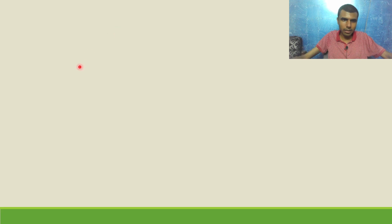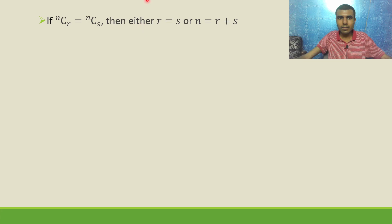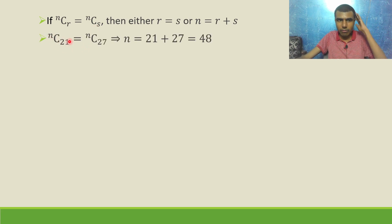If you analyze our question, ⁿC₂₁ = ⁿC₂₇. Is 21 equal to 27? No. Then the other case is n must equal r plus s. That means n will equal 21 plus 27, which is 48. So I got n.